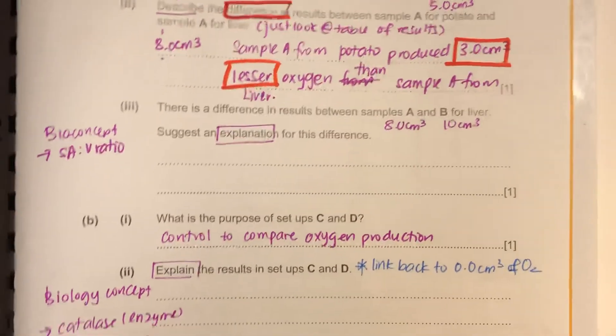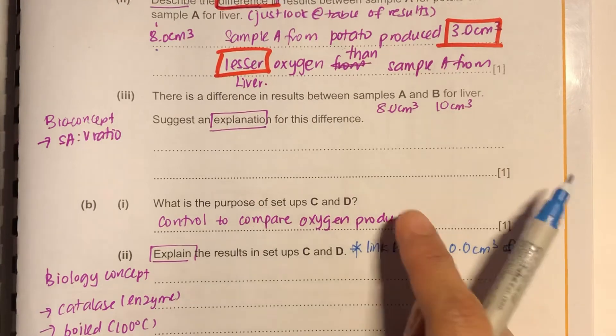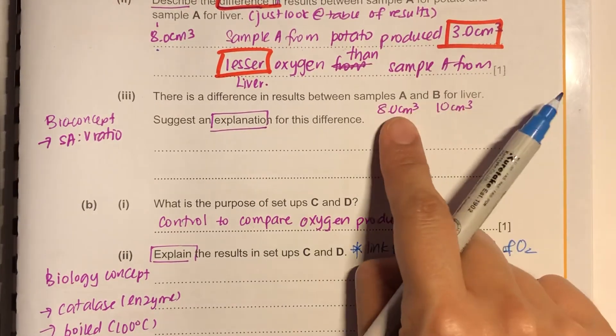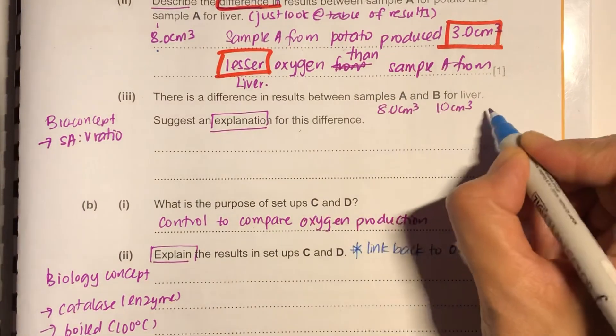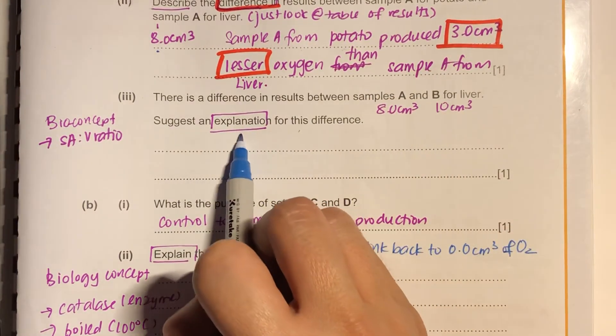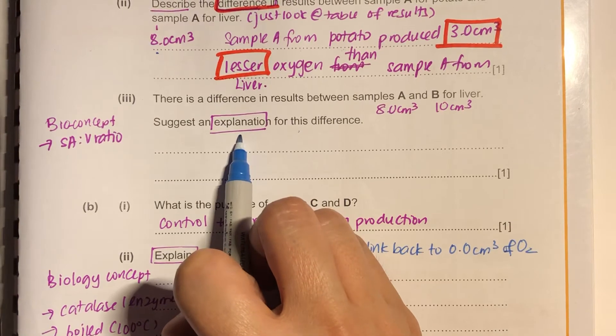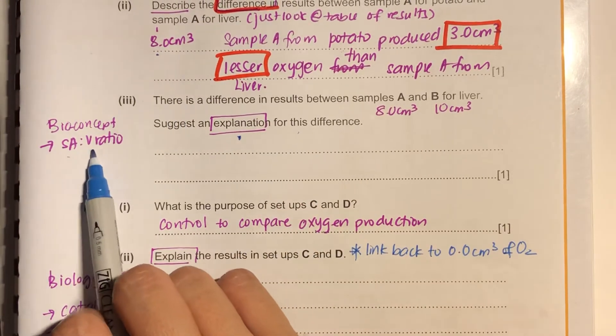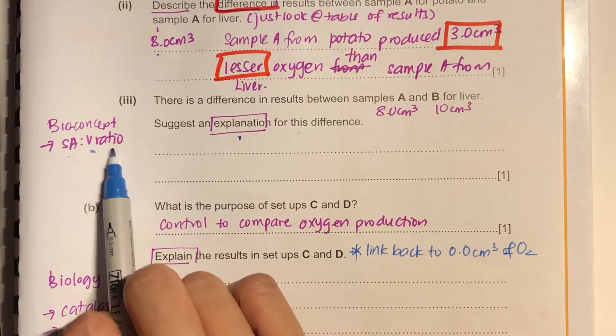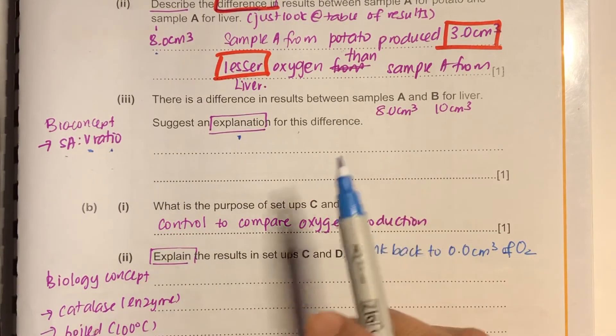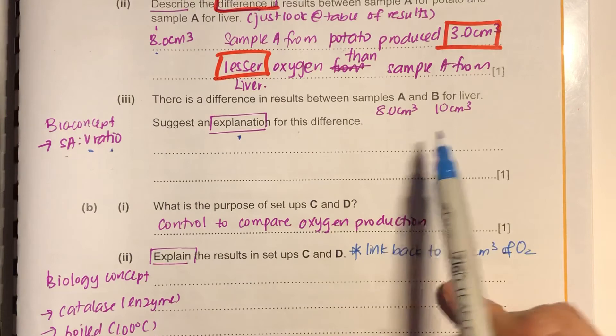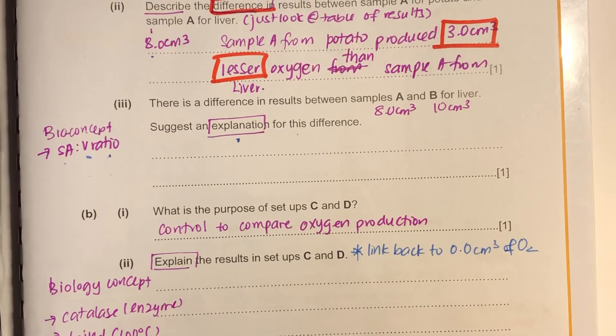Now there is a difference in the results between A and B. So I wrote it down here again. So suggest an explanation for this difference. So they don't want you to tell the difference now. They need to explain. So the biology concept here is the surface area to volume ratio of the cells that are exposed to the hydrogen peroxide so that the enzymes can then work on the hydrogen peroxide solution.